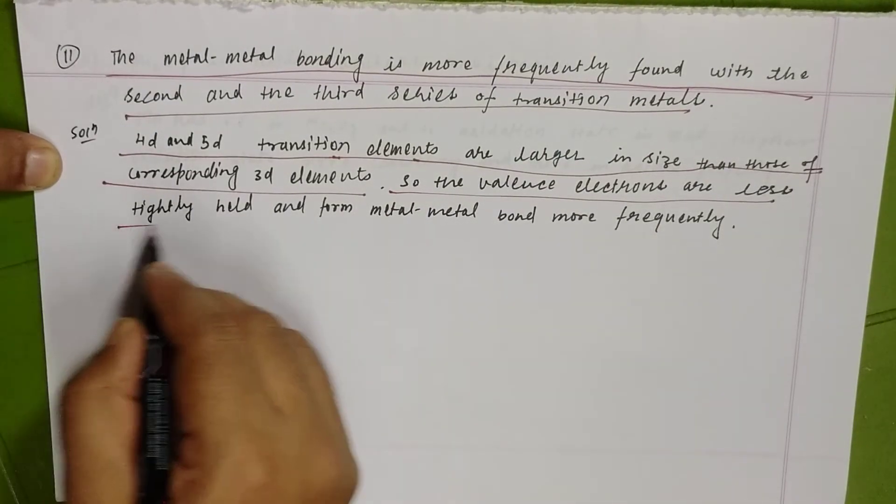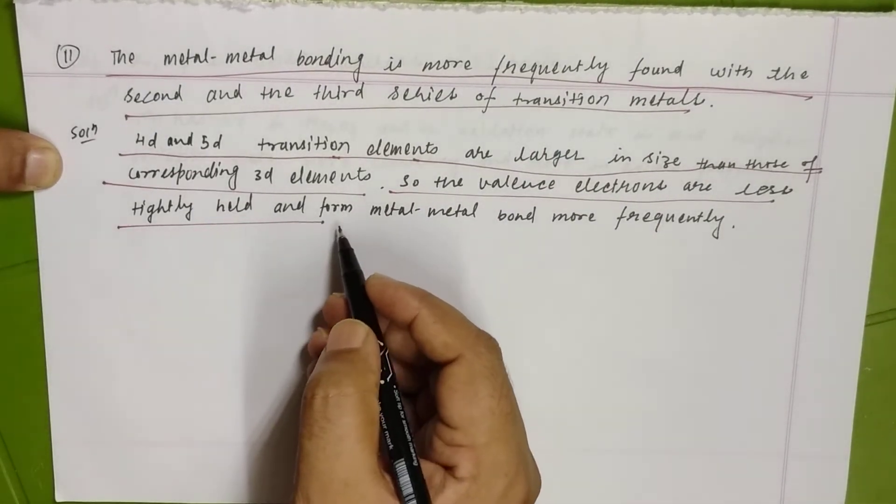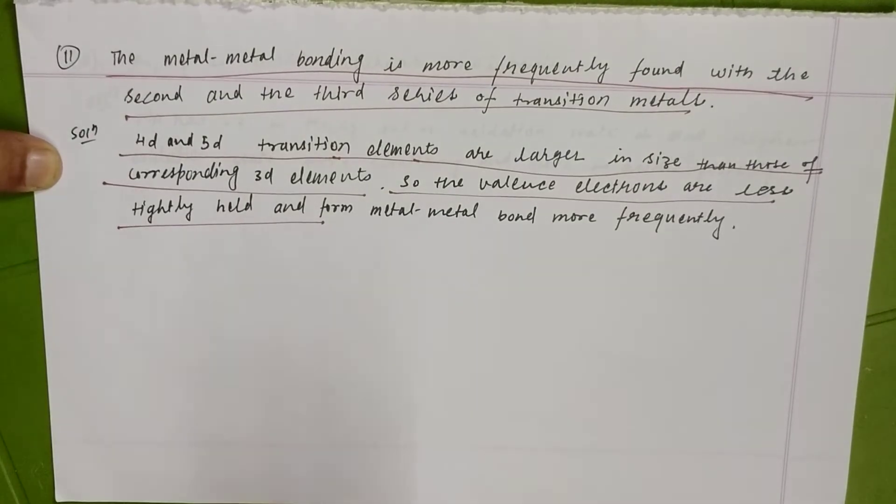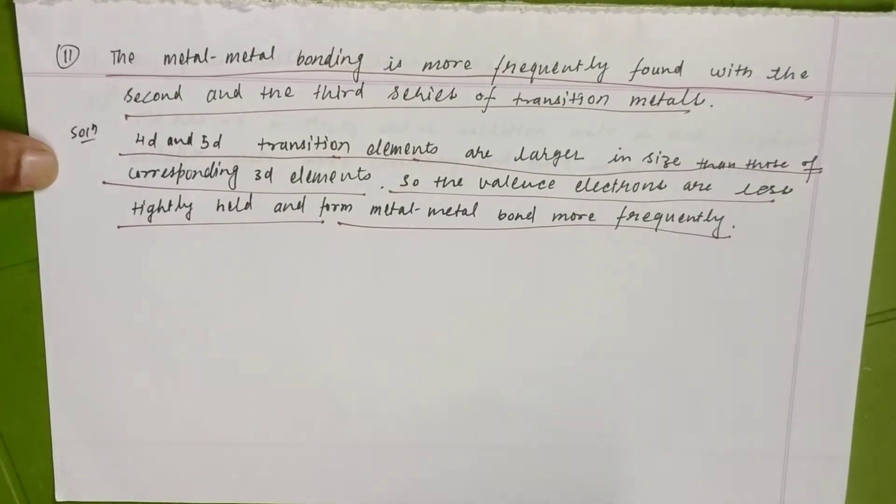The valence electrons are less tightly held. And if the valence electrons are less tightly held, they will form the metal-metal bond more frequently.